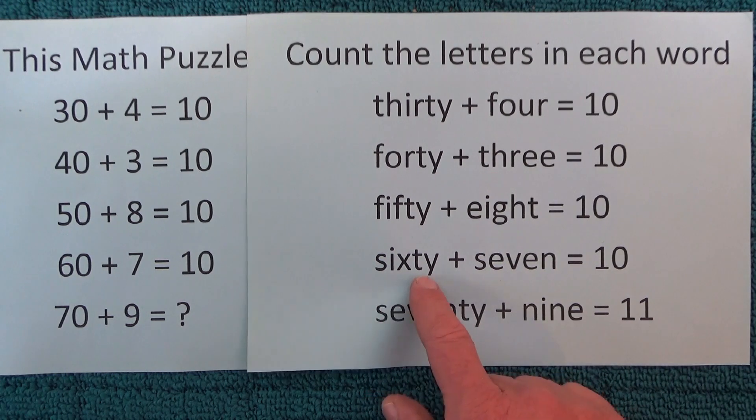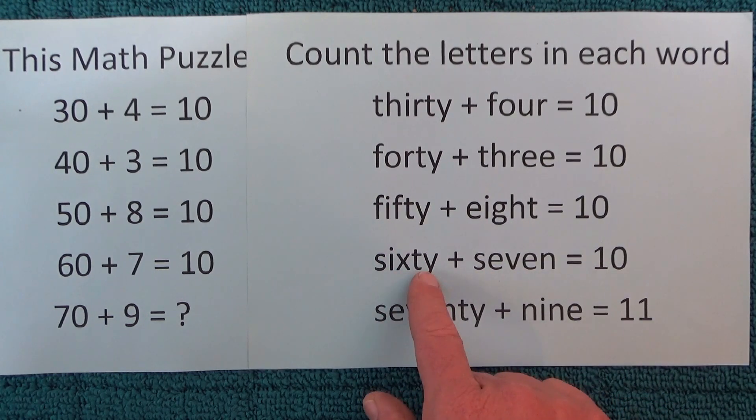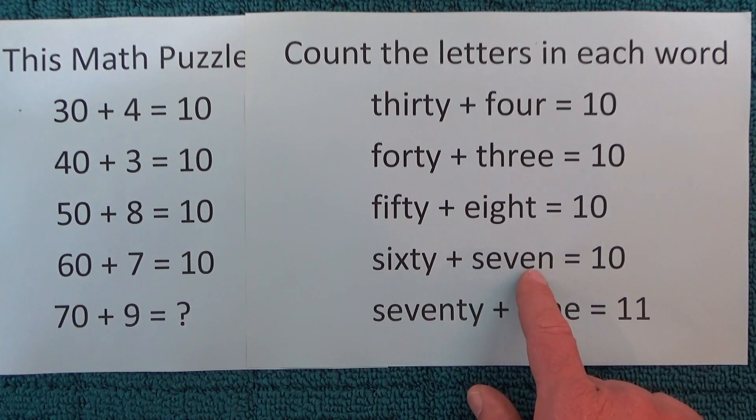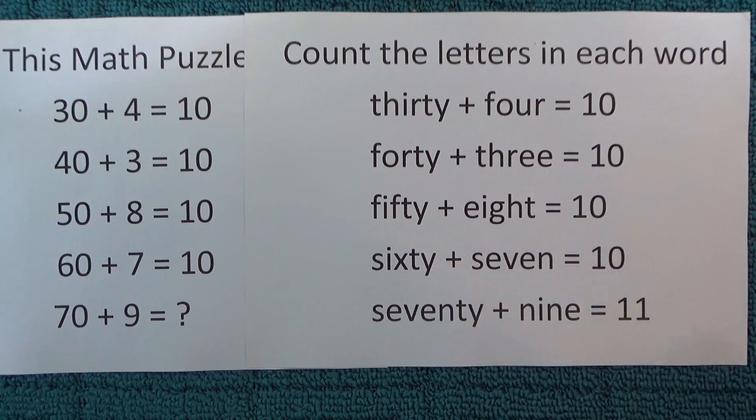And actually the same with 60 plus 7: you've got 5 letters in sixty, 5 letters in seven. 5 plus 5 equals 10.